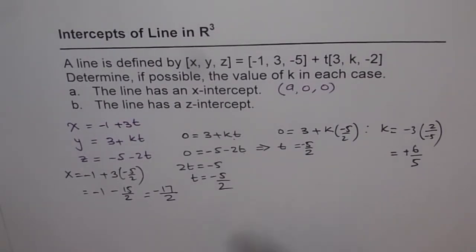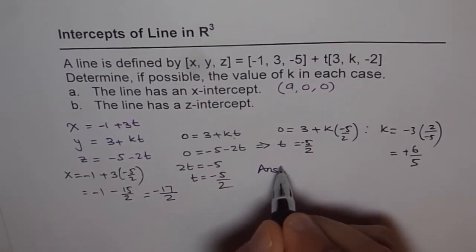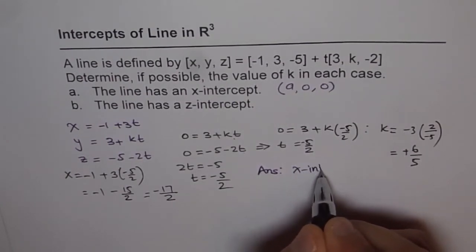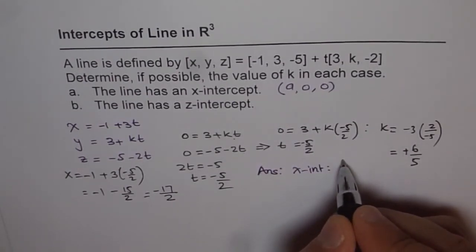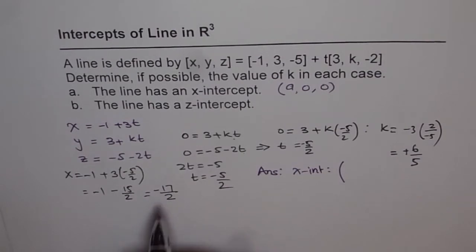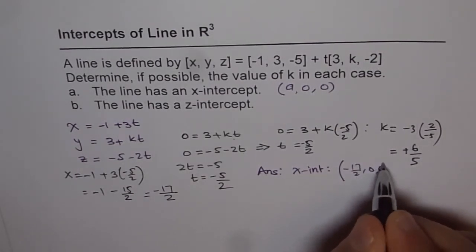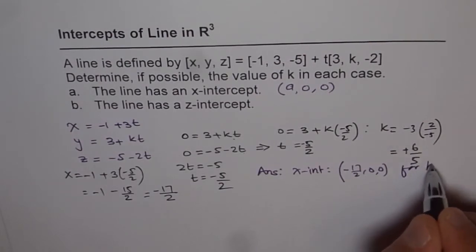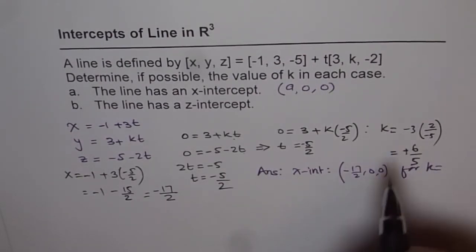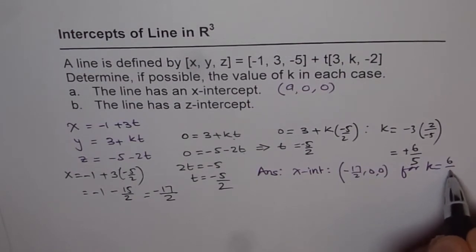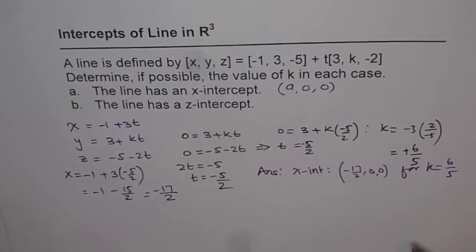And therefore, we can write down our answer. The answer is: x-intercept will be (-17/2, 0, 0) for k = 6/5.